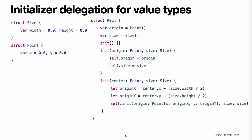Initializer delegation for value types. Initializers can call other initializers to perform part of an instance initialization. This process, known as initializer delegation, avoids duplicating code across multiple initializers. The rules for how initializer delegation works are different for value types and class types. Value types — structures and enumerations — do not support inheritance, and so their initializer delegation process is relatively simple, because they can only delegate to another initializer that they provide themselves. Classes, however, can inherit from other classes, which means classes have additional responsibilities for ensuring that all stored properties they inherit are assigned a suitable value during initialization.